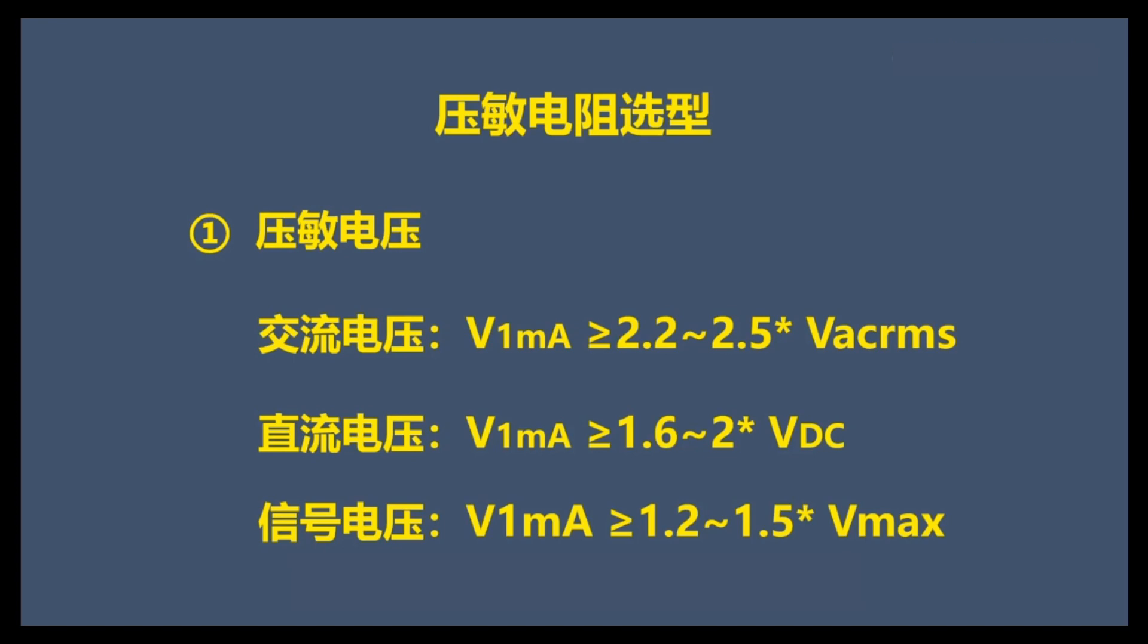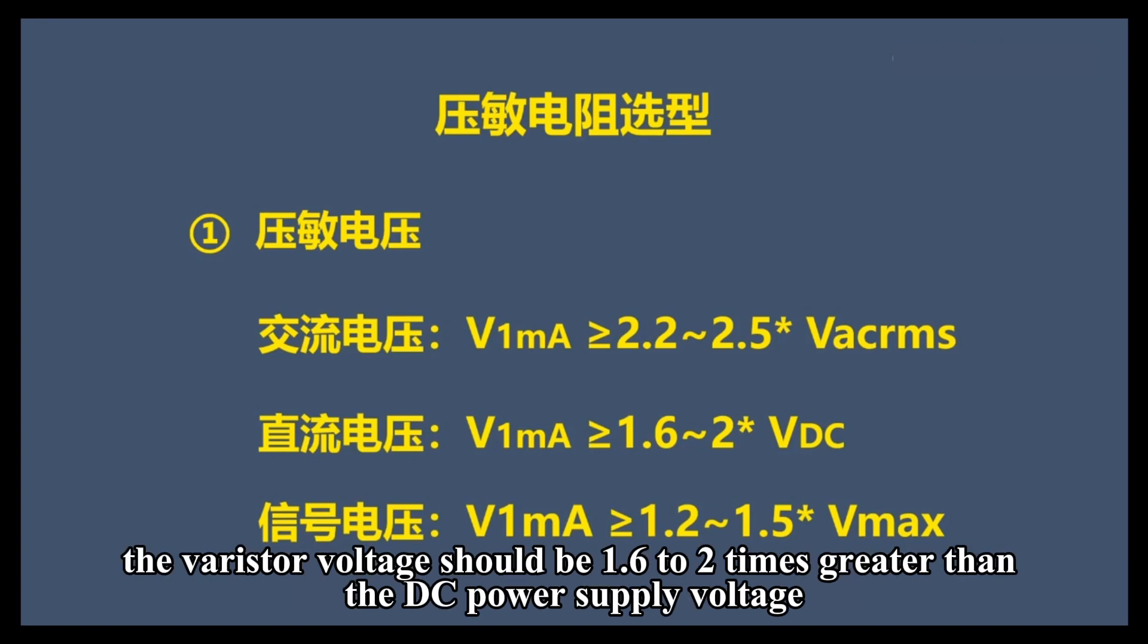When used for DC power protection, the varistor voltage should be 1.6 to 2 times greater than the DC power supply voltage.